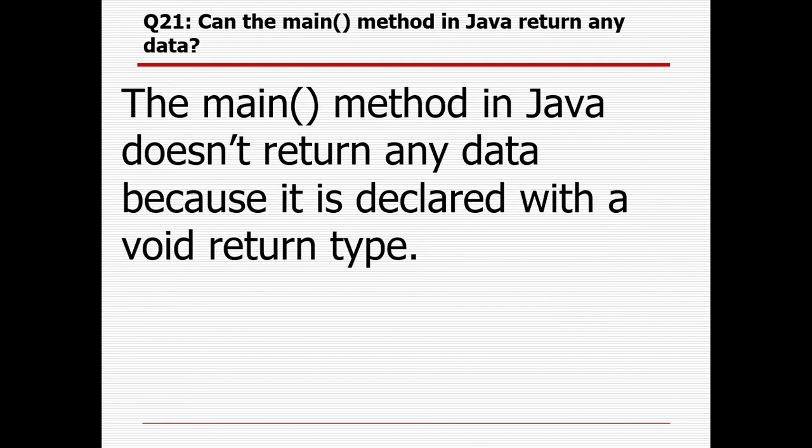Can the main method in Java return any data? The main method in Java does not return any data. It is declared with a void return type — public static void main — so the return type is void, and it does not return any data.